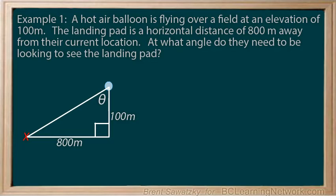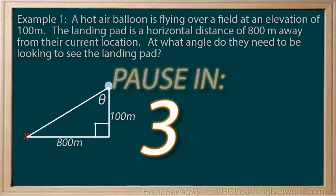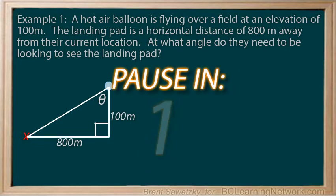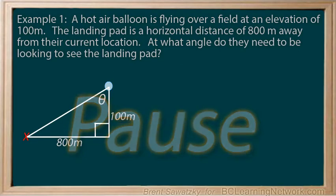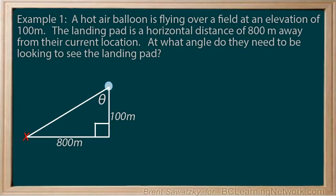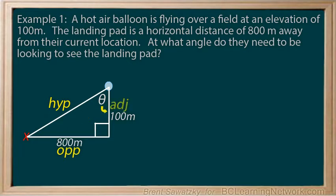Let's identify the sides so we know which ratio we're going to need. The hypotenuse is across from the 90 degree angle. Our reference angle is theta, so opposite to theta is the horizontal distance of 800 meters, and adjacent to theta is our elevation of 100 meters. So which trig ratio are we going to use?